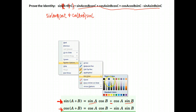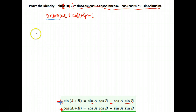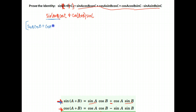To make this more clear, I'm going to change ink colors. We're going to start by expanding sine of A plus B using the identity, which says it is the sine of the first angle A times the cosine of the second angle B, plus the cosine of the first angle A times the sine of the second angle B. And that all was multiplied by cosine of C.